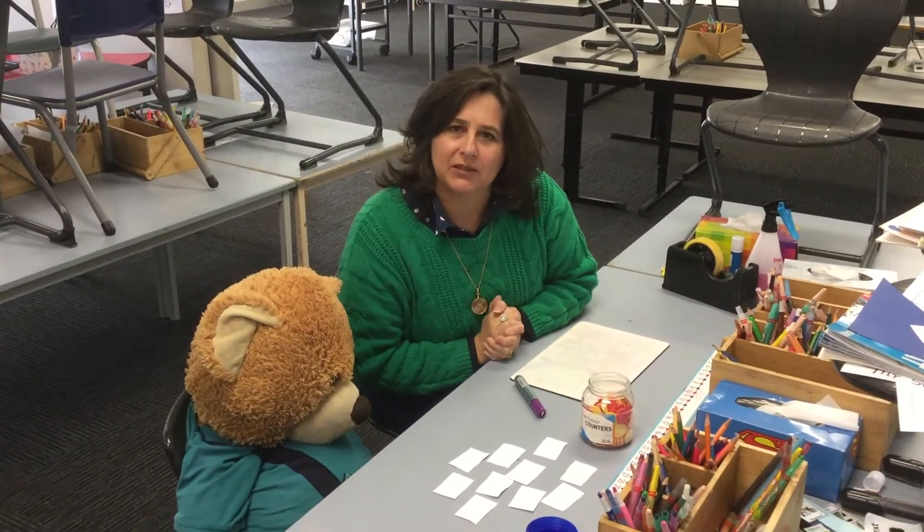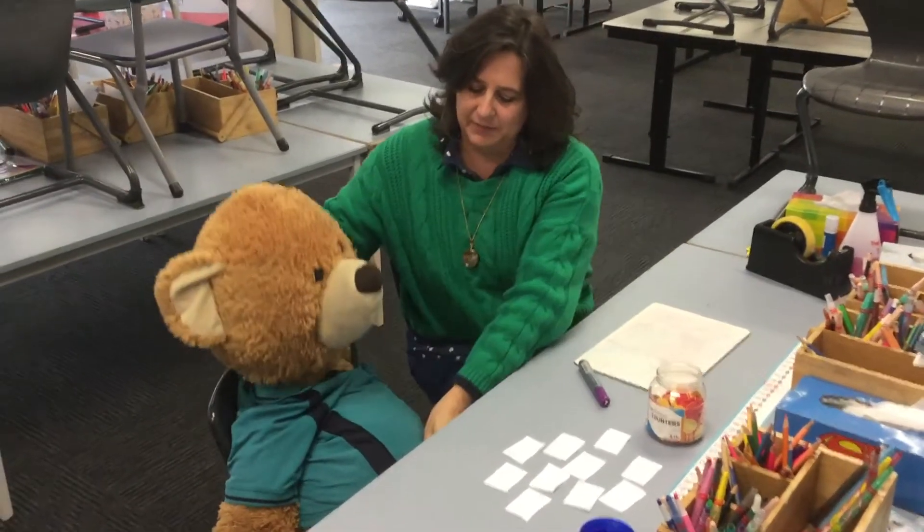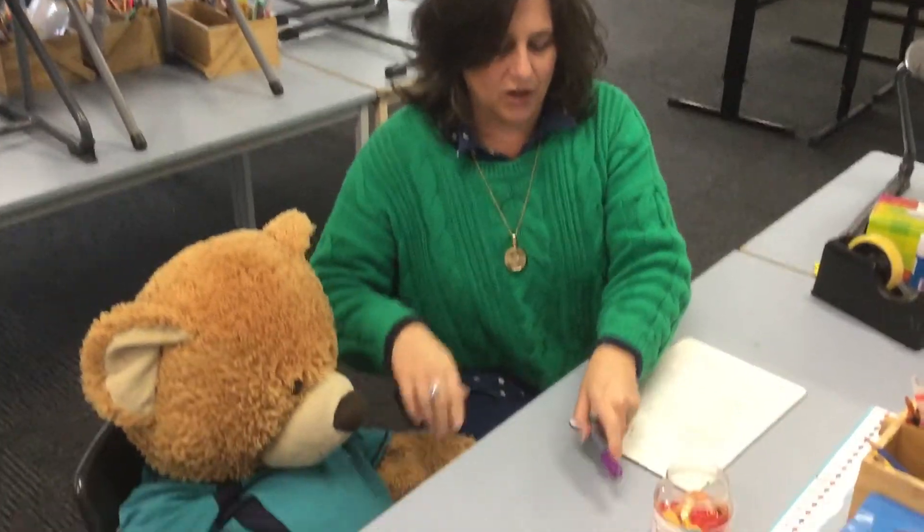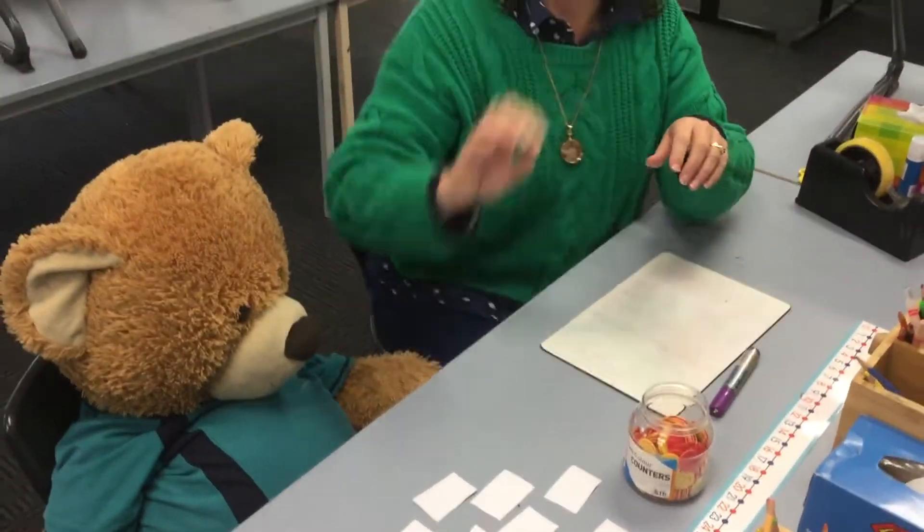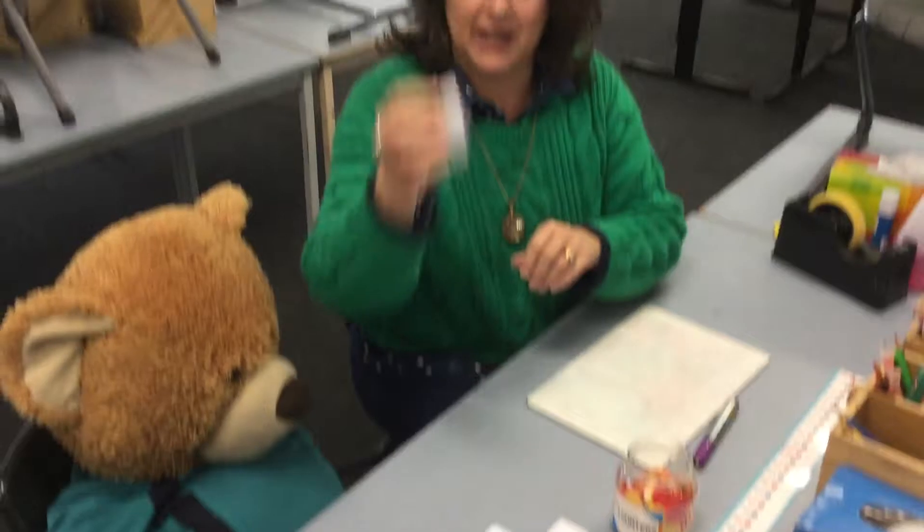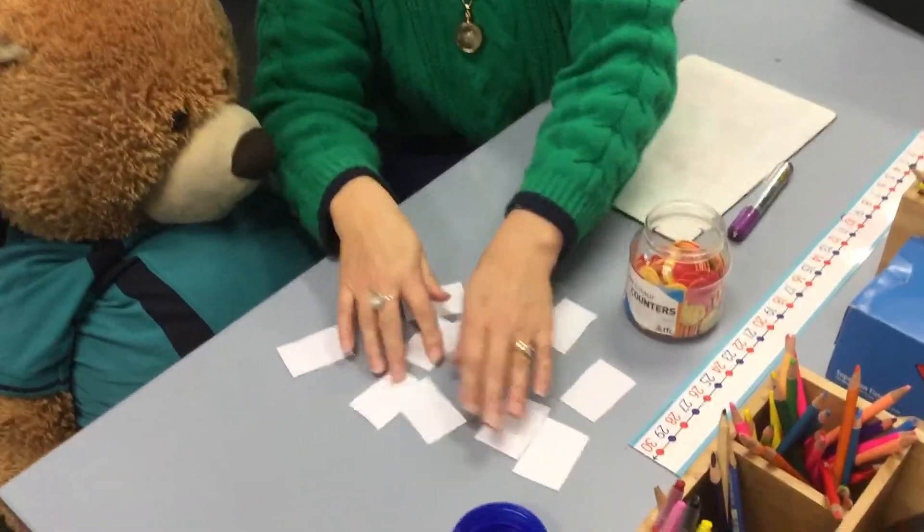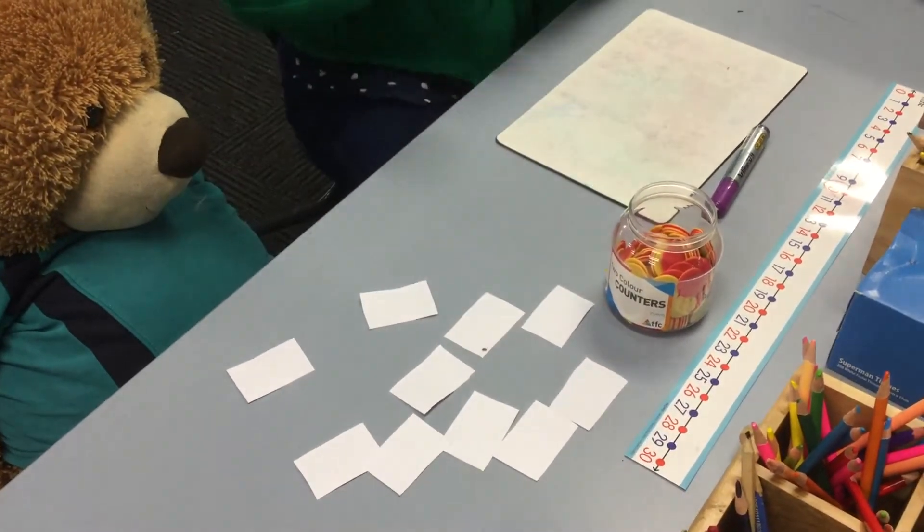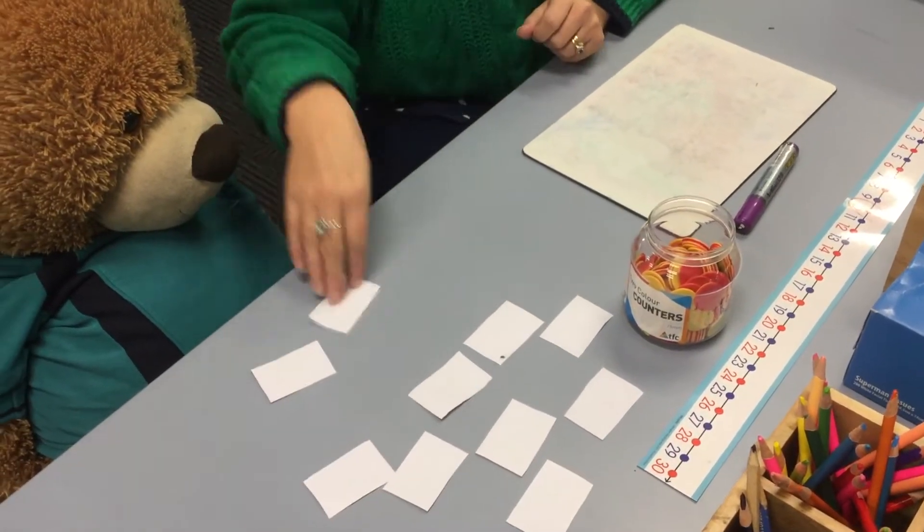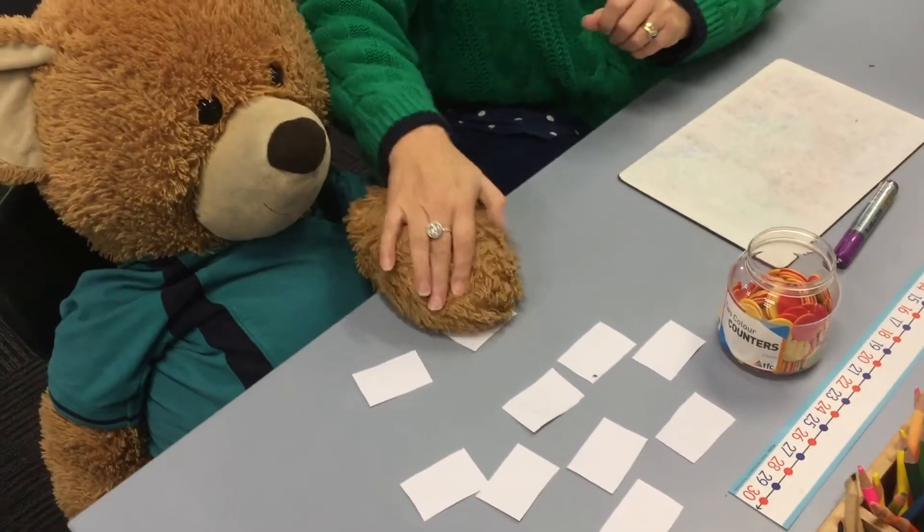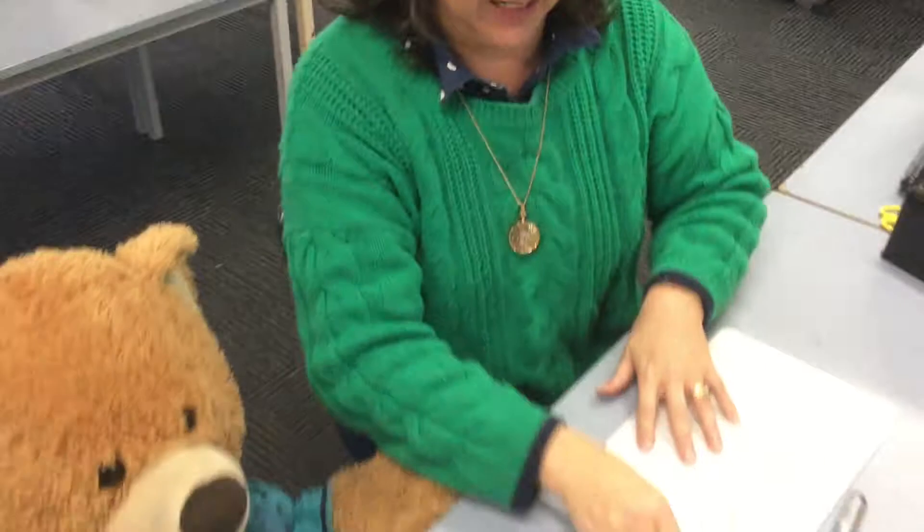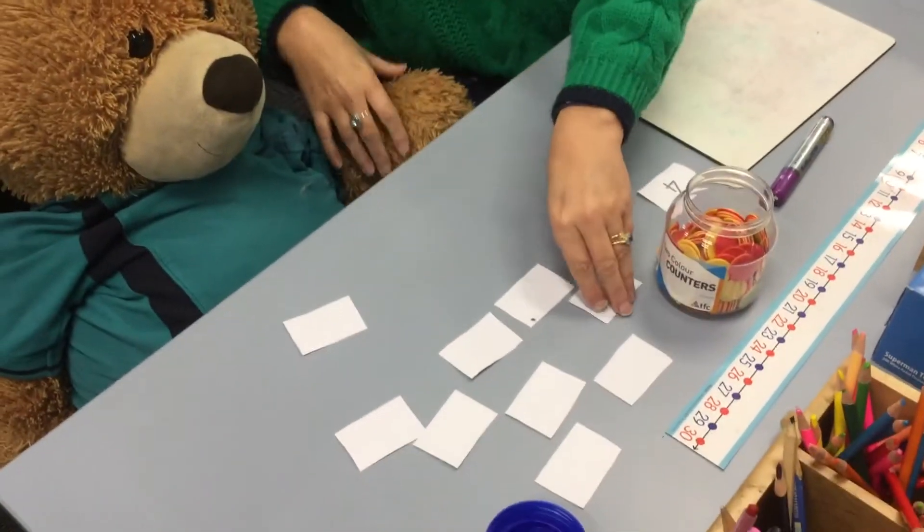To start us off today we're going to play a bit of a game and I've got Big Ted as my helper today. You will have in your pack a sheet which had a whole lot of different numbers on it, so you cut up the numbers, you mix them all up, and then you get to choose two numbers. So I'll get Big Ted to choose a number. What number is that, prep? Number four. Okay, so we've got number four.